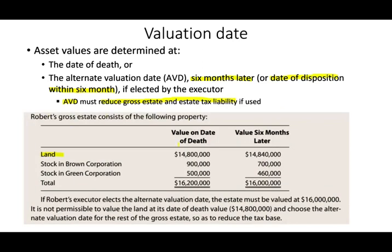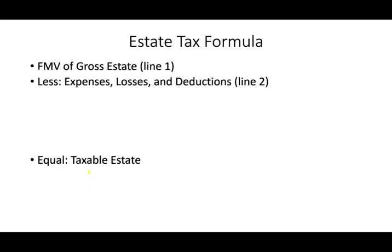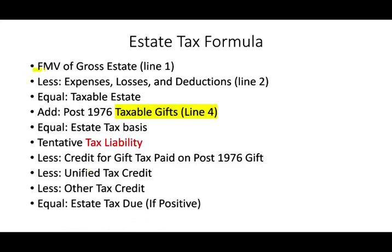Let's look at a quick example. Robert's gross estate consists of land valued at $14,800,000 at date of death and $14,840,000 six months later; stock in Brown Company at $900,000 with a lower value six months later; and stock in Green Corporation, also lower six months later. The total at date of death is $16.2 million; six months later it's $16 million. If Robert's executor elects the alternative valuation date, the estate must be valued at $16 million across the board. It's not permissible to cherry-pick — to value the land at date of death and other assets at the alternative date — unless specific assets were sold during that period.